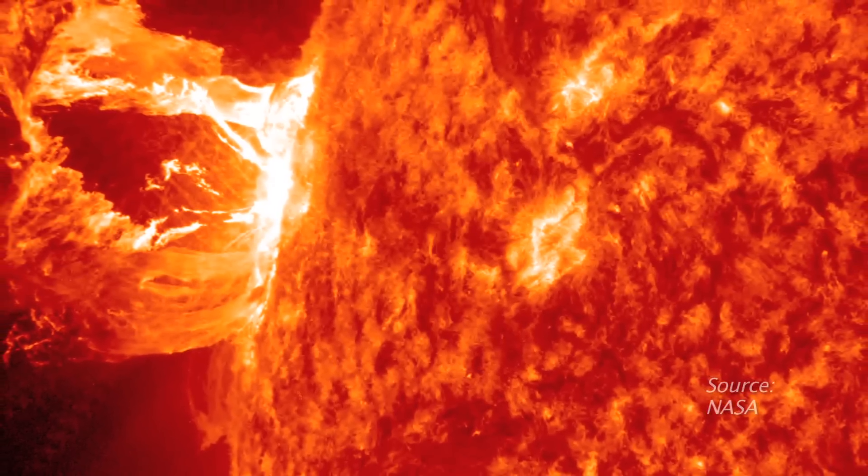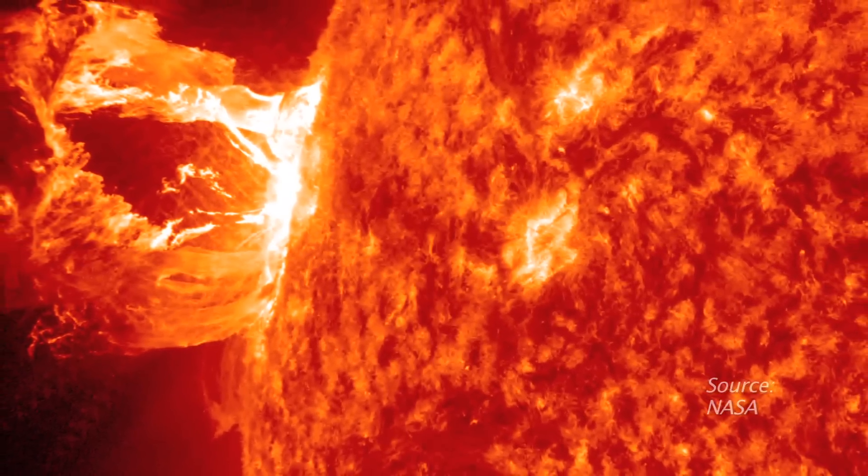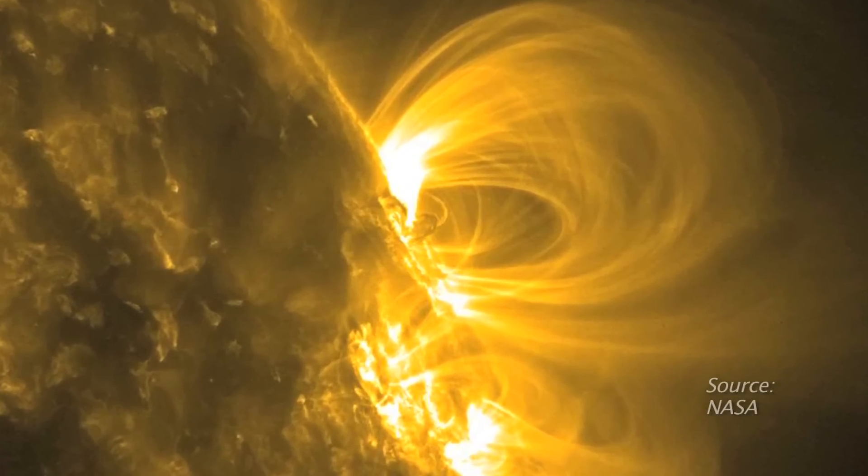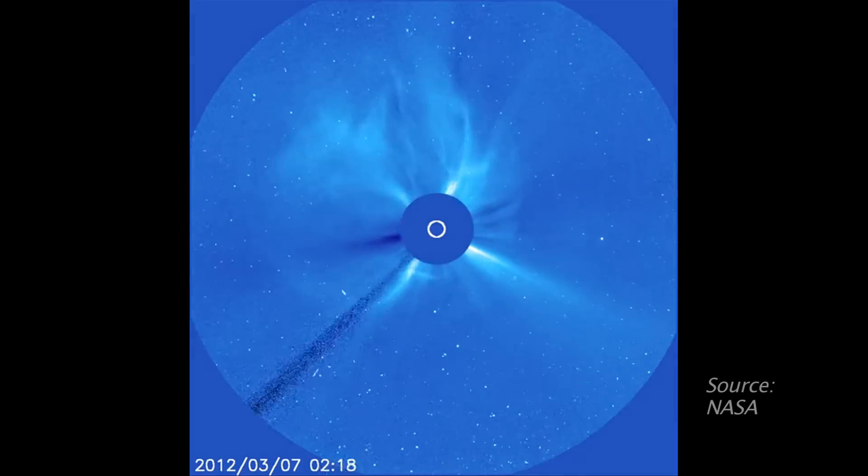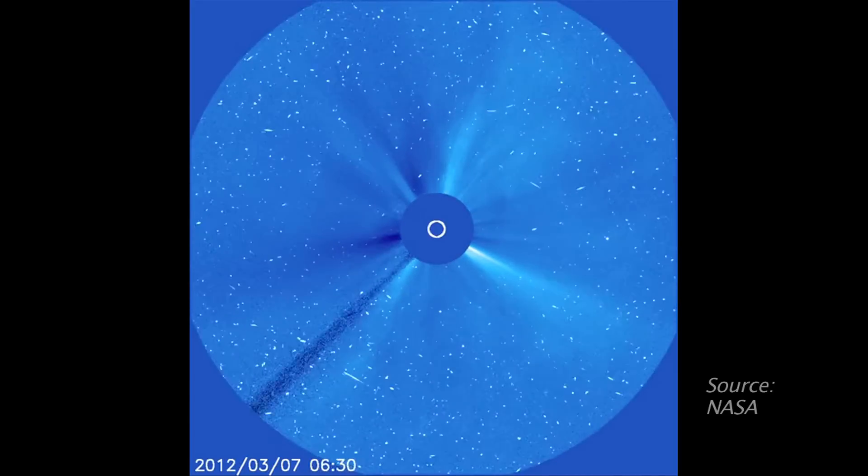Charged particles on the sun's surface build up energy, generating huge magnetic loops. When the loops break, these particles are released, creating a solar flare that can reach the Earth.